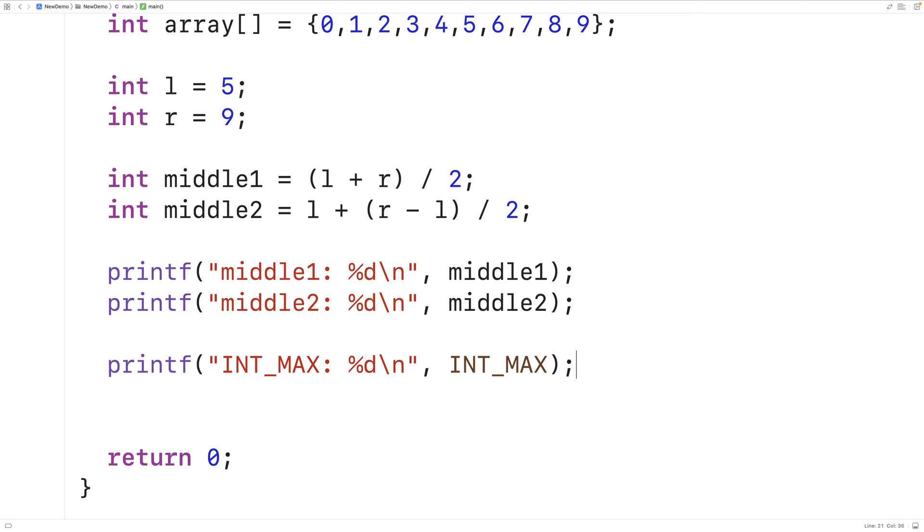If we try to store a number that's larger than int underscore max into an int variable, we're going to get an integer overflow and something like a negative number will end up being stored in the int variable because it just can't store a number that large. Now the issue here is that with this first approach, we have L plus R. If L and R are both very large numbers, we could have integer overflow occur.